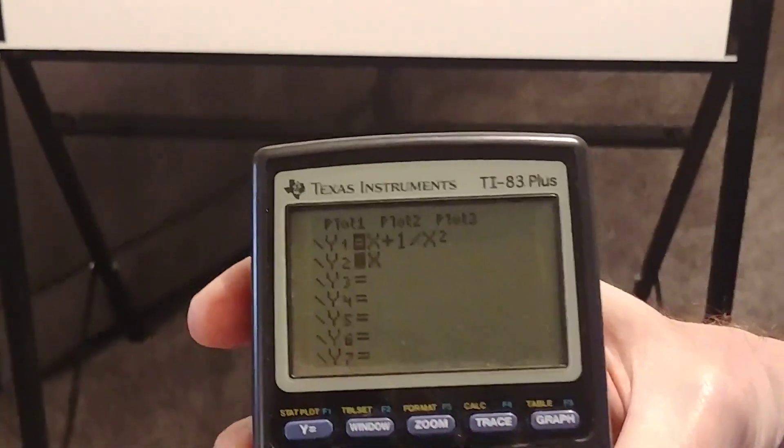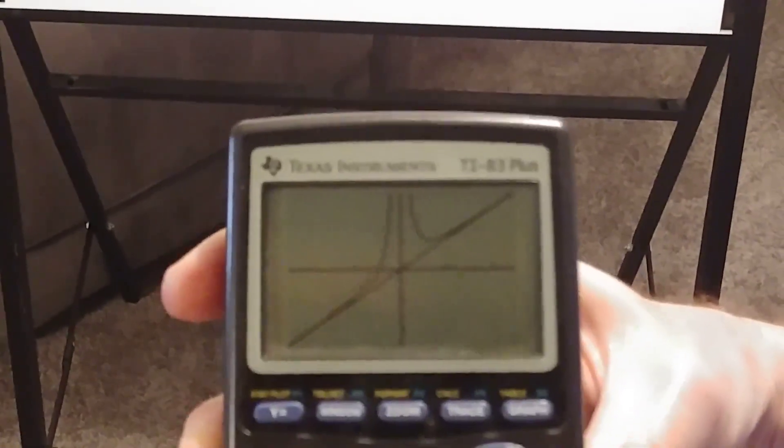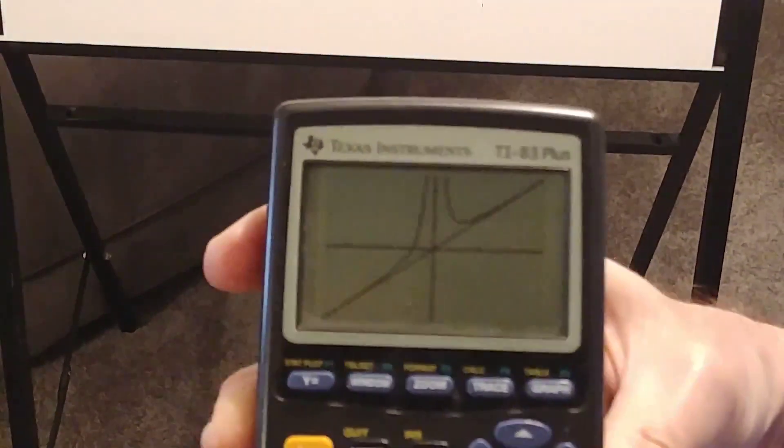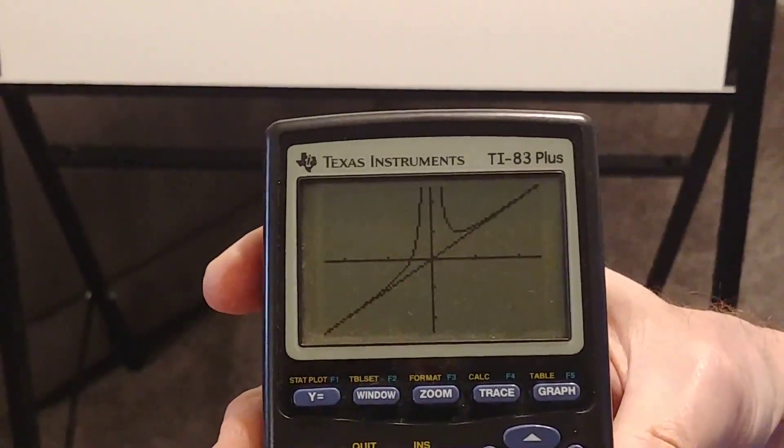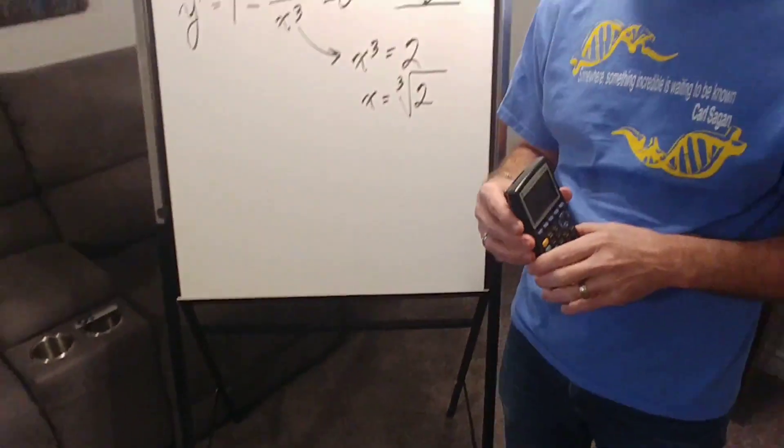Just one second, I didn't quite highlight that. There we go. That term 1 over x squared disappears when x gets really big or really small in the negative sense. So isn't that an interesting question? See you next time.